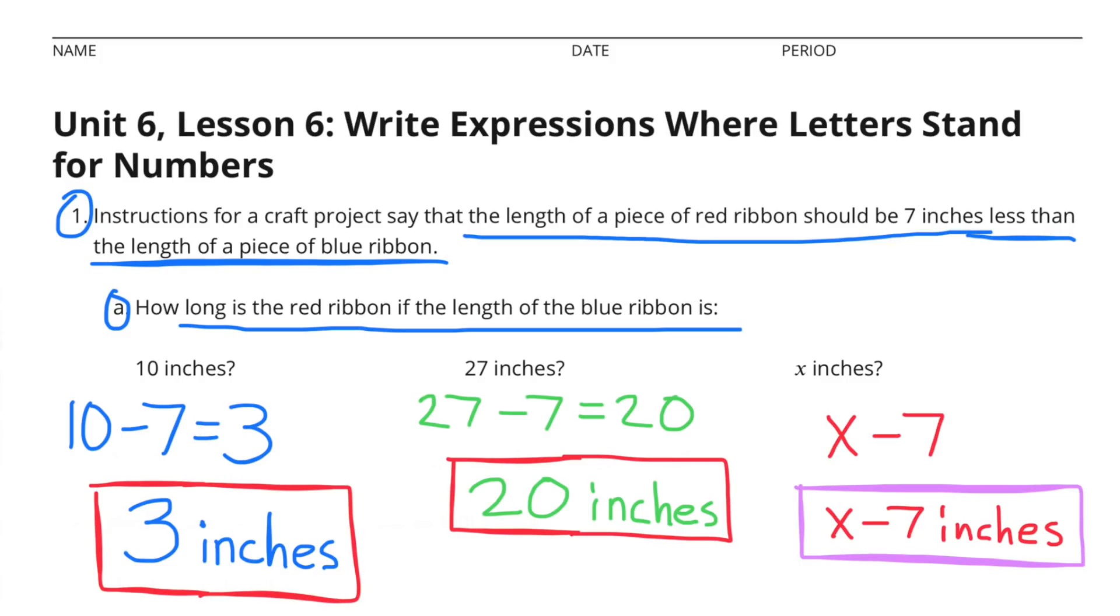Number 1. Instructions for a craft project say that the length of a piece of red ribbon should be 7 inches less than the length of a piece of blue ribbon.